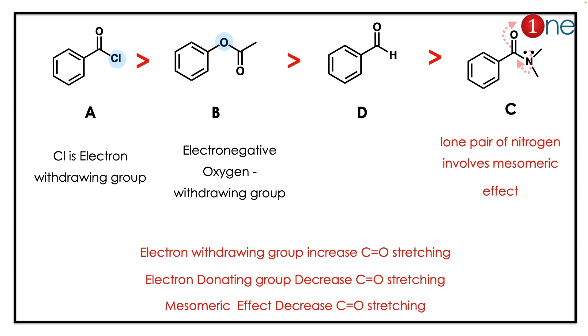The answer lies in three facts: electron withdrawing groups increase the CO stretching frequency, electron donating groups decrease the CO stretching, and the mesomeric effect also decreases the CO stretching.